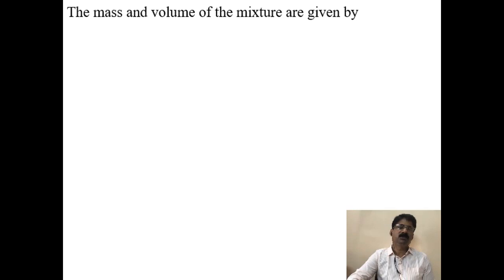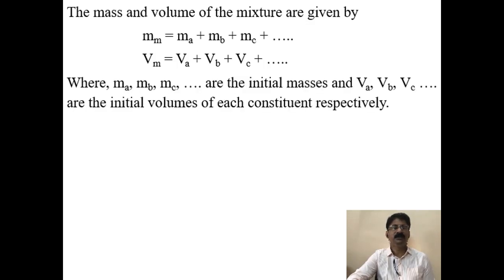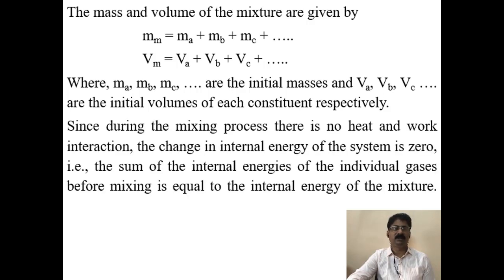The mass of the mixture is equal to the summation of the masses of the individual component gases. The volume of the mixture equals the sum: Vm = Va + Vb + Vc, where Va, Vb, and Vc are the initial volumes of each gas in their respective compartments. When partitions are removed, they occupy the entire volume Vm. Since there is no heat and work interaction during mixing, the change in internal energy is zero.